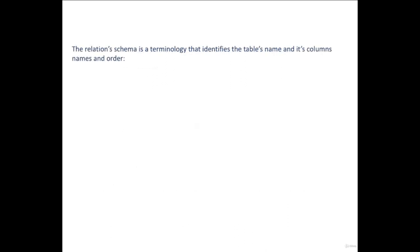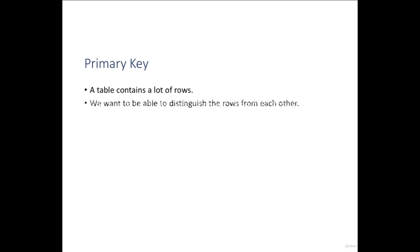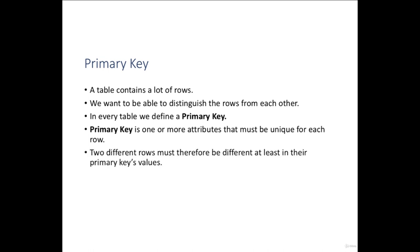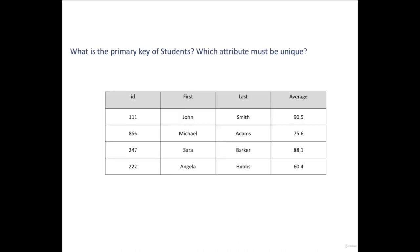The relation schema is terminology that identifies the table's name and its columns' names and order. For example, this is the schema of the students table — it has the name and four values for the columns denoting the name and order of the columns. A table contains many rows and we want to be able to distinguish the rows from each other. In every table we define a primary key. A primary key is one or more attributes that must be unique for each row.